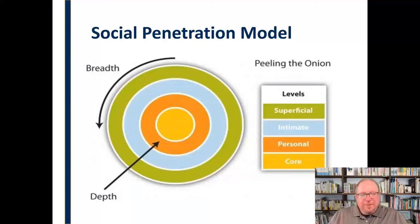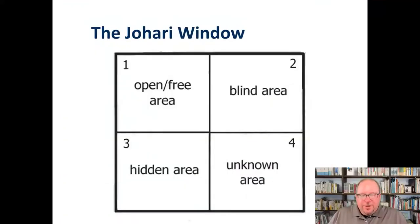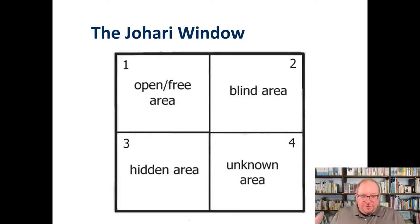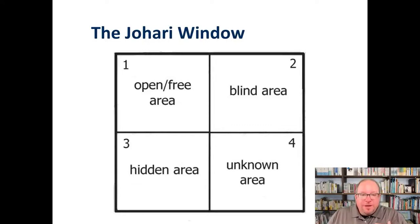The other model I want to discuss briefly is called the Johari Window — named because the people who developed it were named Joe and Harry. The Johari Window has four boxes, four areas within that window. It stipulates that people have all four areas in terms of self-disclosure. First, there's the open and free area — things everybody clearly knows about you. The fact that I wear glasses, that I'm losing my hair, that I'm a communication professor — that's open and free information, things I know about myself that others also recognize.